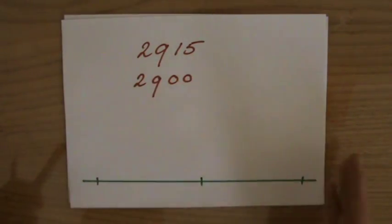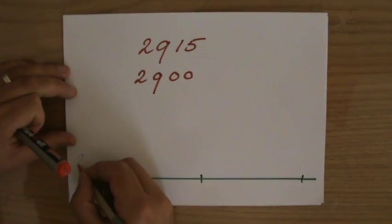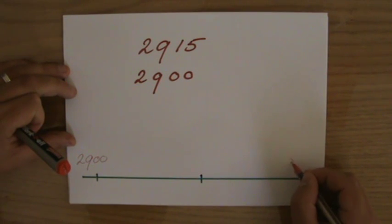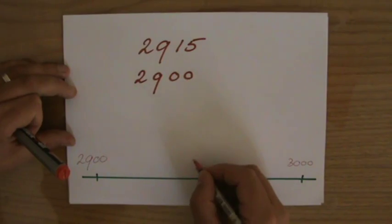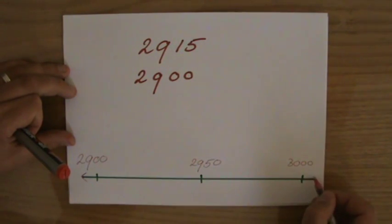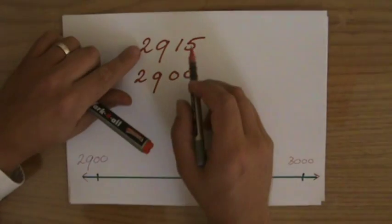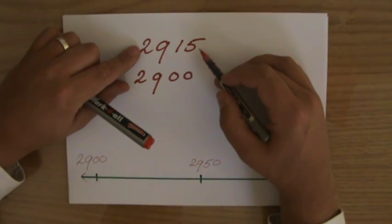Now, again, I want to show you that on the number line, where I have on one side 2,900, and on the other side, the next 100 would be 3,000. And all the way in the middle, you have 2,950. This is to the nearest 100. And where on this part of the number line can I position 2,915?